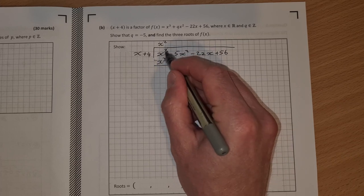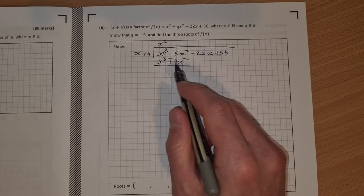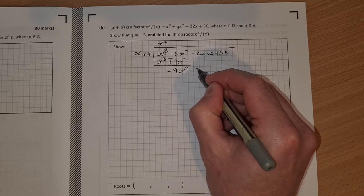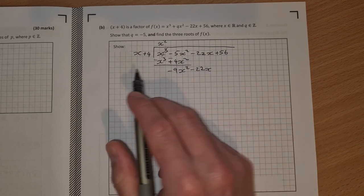Change the signs there, they cancel. Minus 5 minus 4 is minus 9x squared, bring down the minus 22x, divide it in again.